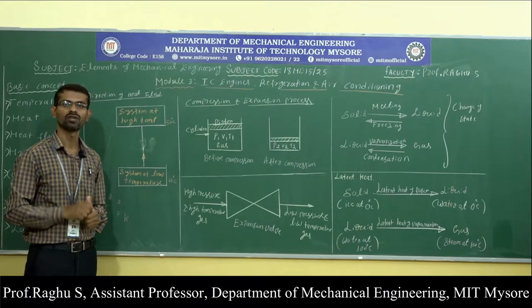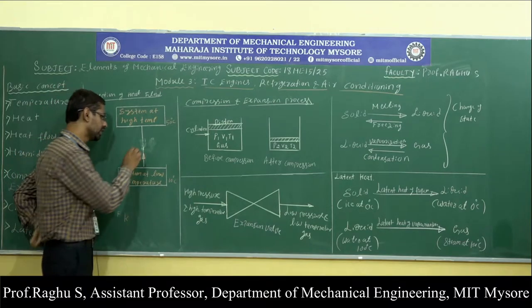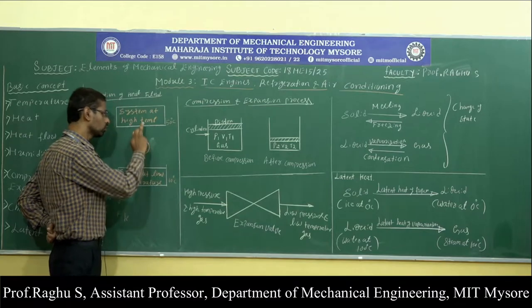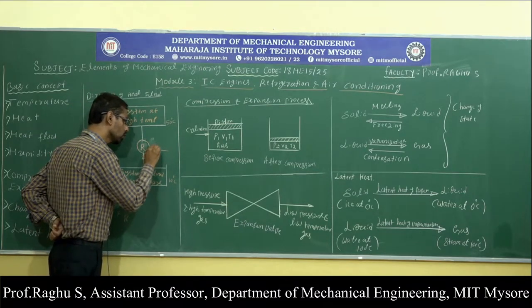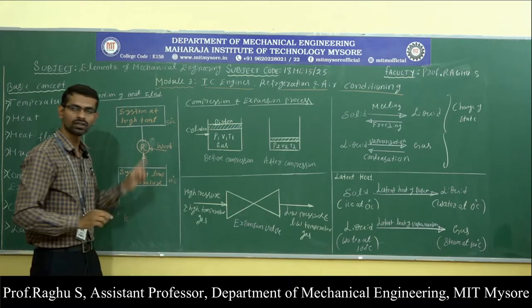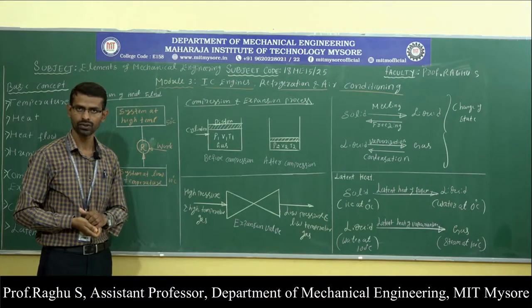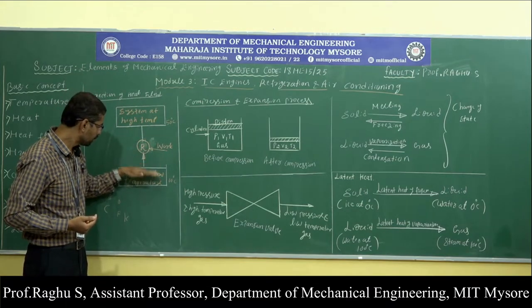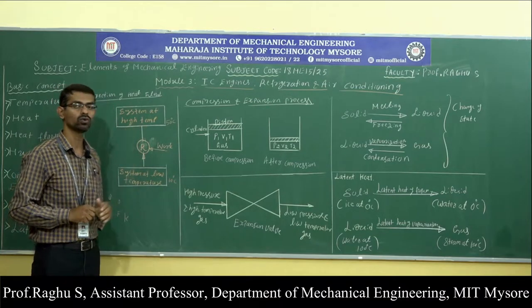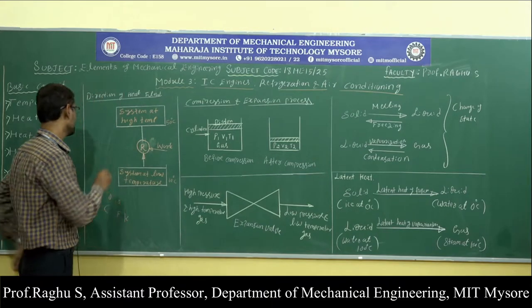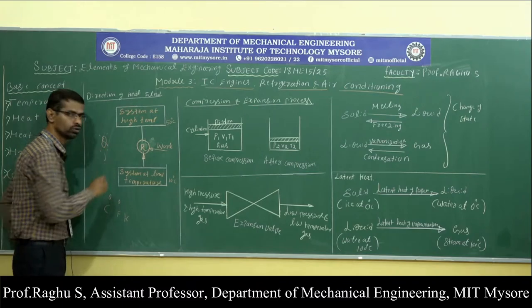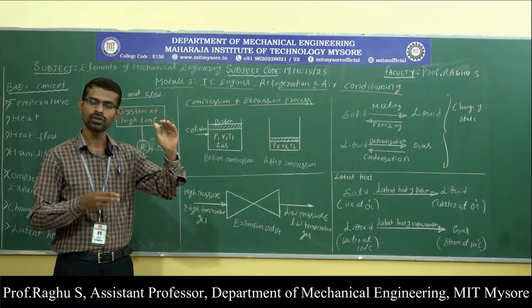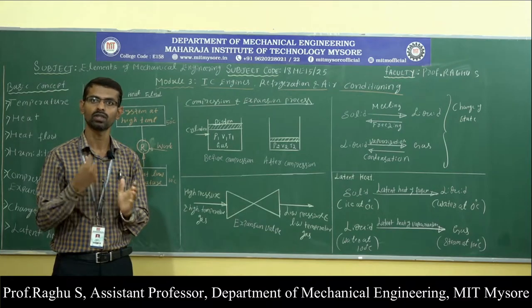To pump heat from a system at lower temperature to a system at higher temperature, we need a device called a refrigerator. By using this device, we can supply heat from the system at lower temperature to the system at higher temperature. But this refrigerator requires some external work — without any external work, the refrigerator does not work. Heat is denoted by Q and the unit of heat is joule. The direction of heat flow is always from a system at higher temperature to system at lower temperature, and this process occurs naturally without any external work.